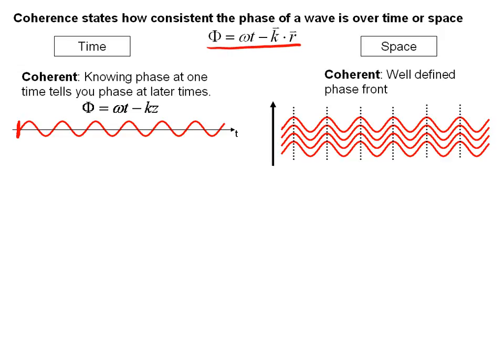In spatial coherence, it means if there's a wave at this location that has a well-defined phase, the waves at other locations in space also have clearly and well-defined phases. There is a relationship between the phase of the wave at one place in space and the wave at another place in space.